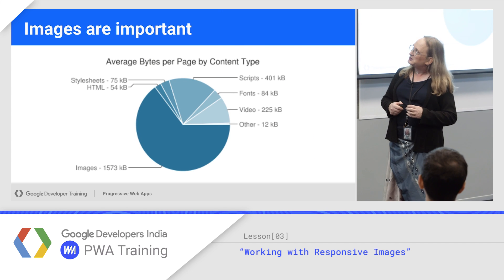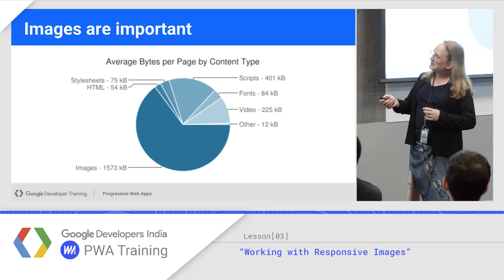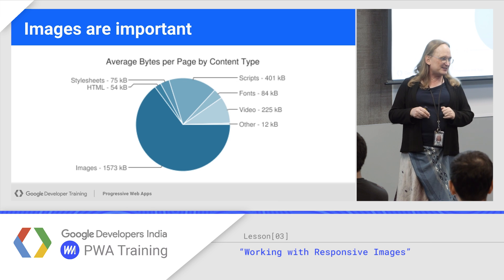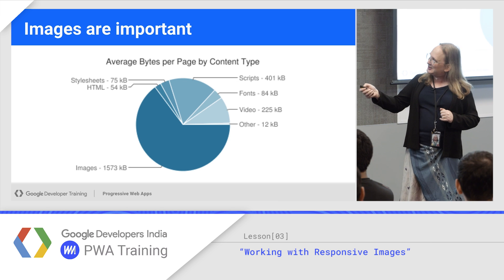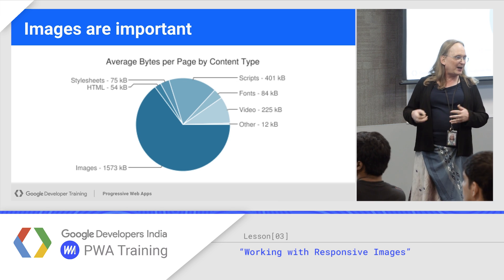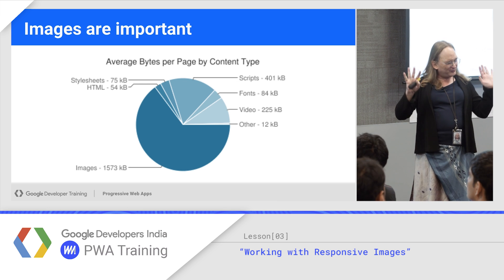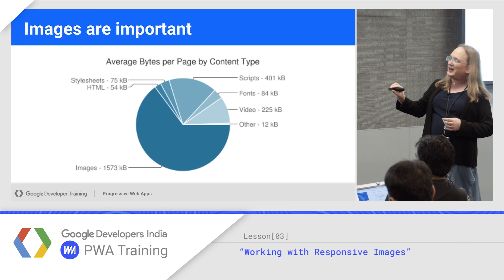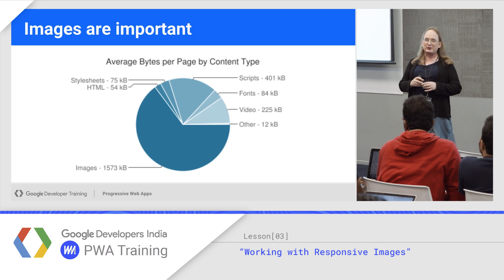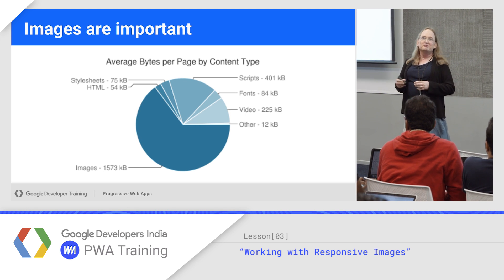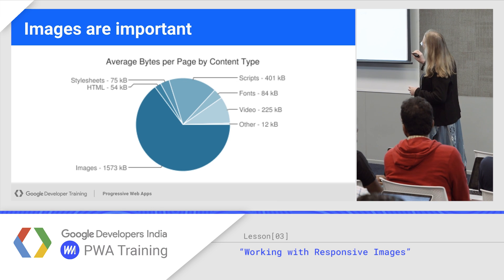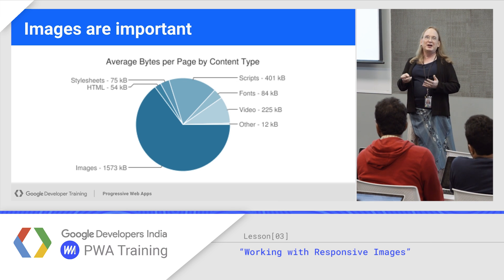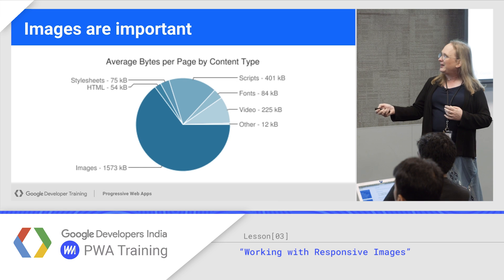So why are images important? If you look at the average bytes per content type per page, we have Google's search engine that looks at all your pages, so we can calculate the average HTML and image sizes. The average image weight of a site is one and a half megabytes. Compare that to 54K of HTML. Images take up a disproportionate amount of the page weight, so if you can get image size down, that would be a good thing.